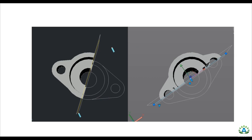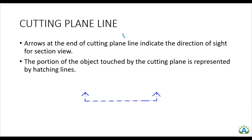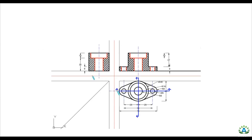This is the cutting plane line. For the cutting plane line, we use this symbol. Arrows at the end of the cutting plane line indicate the direction of the side from which the section view is taken. The two arrows point toward the observer, indicating the direction from which we will view and remove the part.